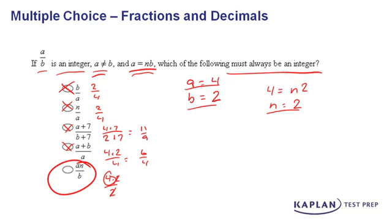But in this case, since we can eliminate A, B, C, D as non-integers, our final answer must be answer choice E.